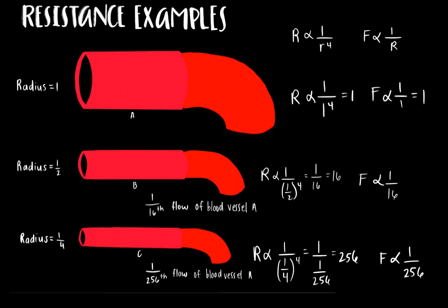Consider three blood vessels with different radii but the same pressure gradient. For blood vessel A, the radius, resistance, and blood flow are all equal to 1. The radius of blood vessel B is one-half that of vessel A; as a result, resistance is 16 times greater and flow is 16 times slower. For vessel C, the radius is one-fourth that of vessel A, thus resistance is 256 times greater and flow is 256 times slower than vessel A.